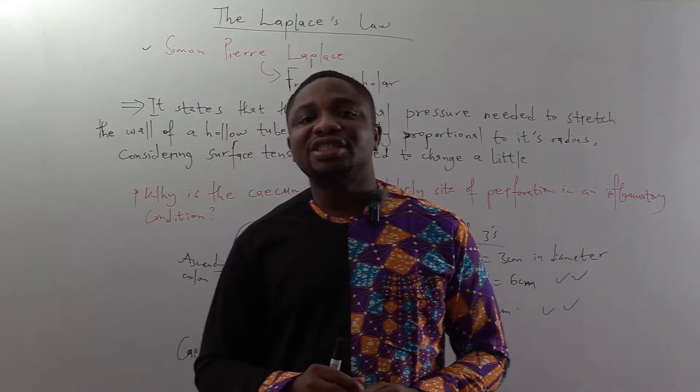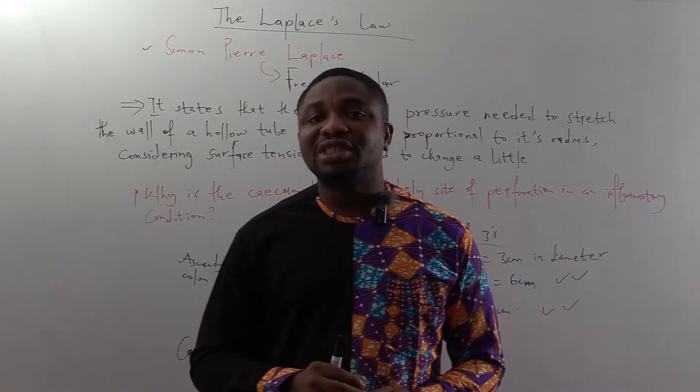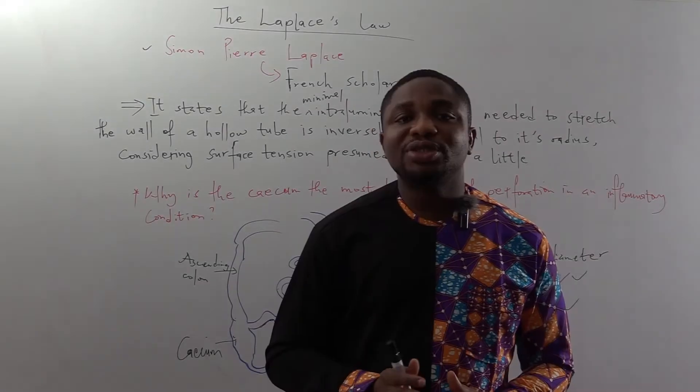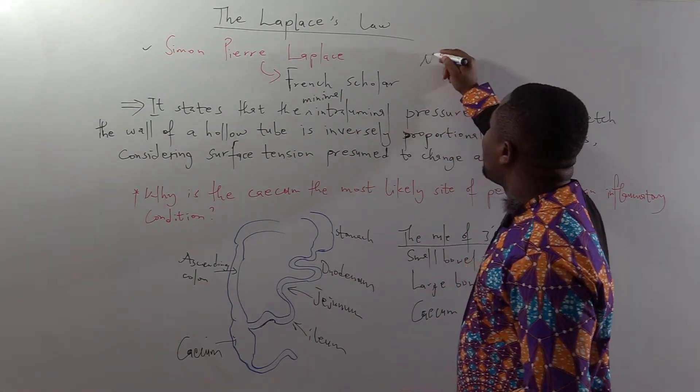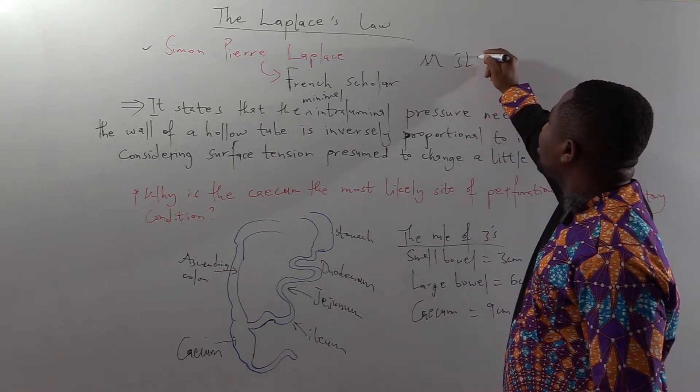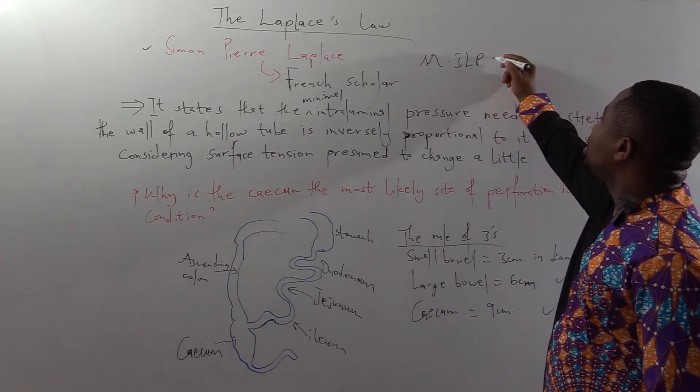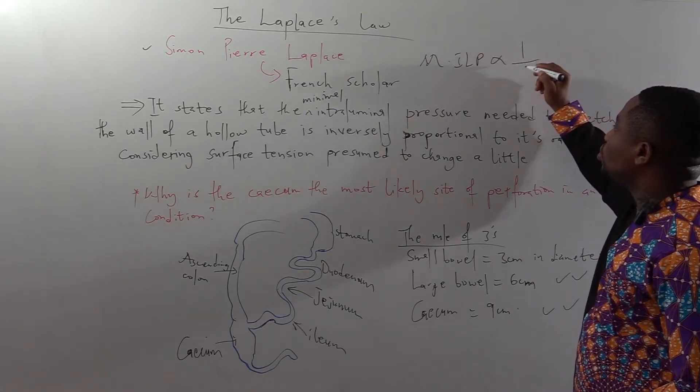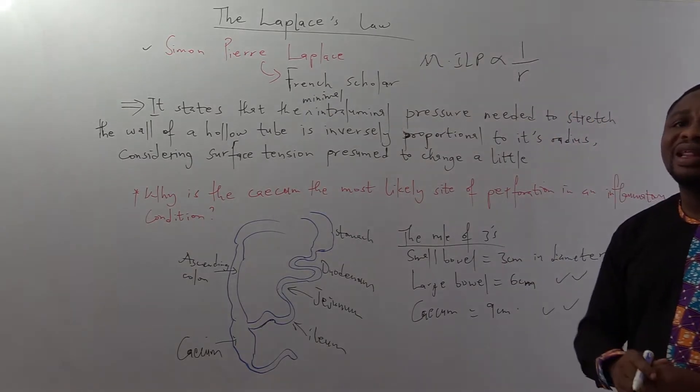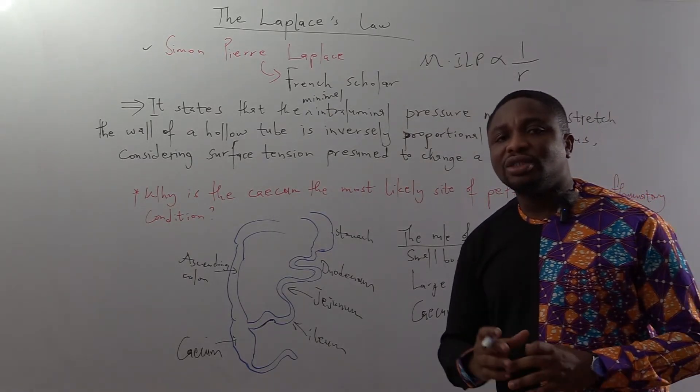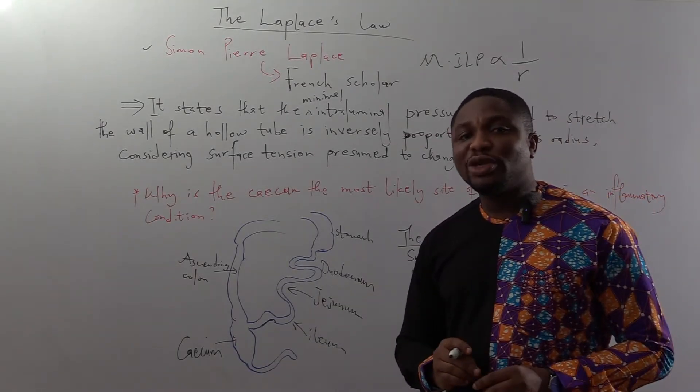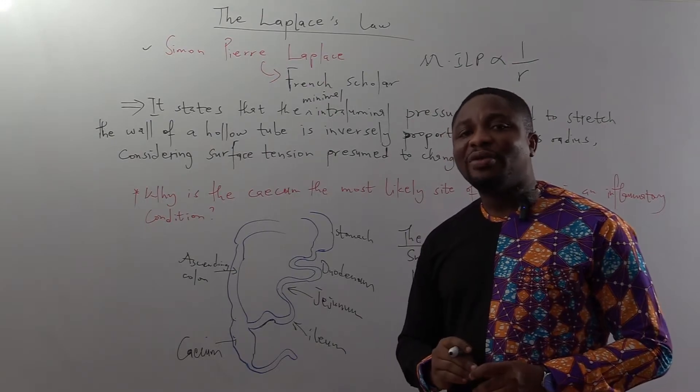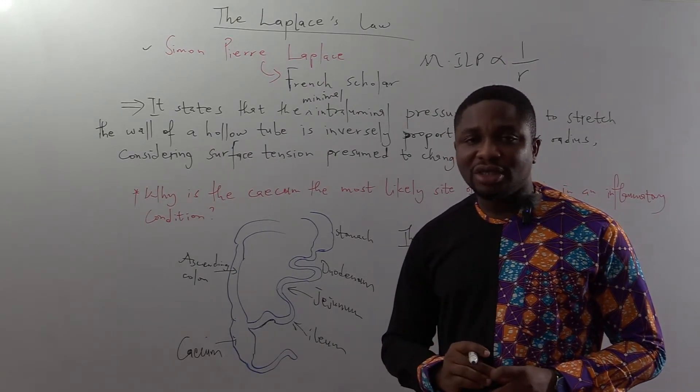considering surface tension is presumed to change a little. So if you are looking at the minimal intraluminal pressure, it is going to be inversely proportional to the radius of that tube that you want to stretch the wall. The minimal intraluminal pressure that you need would vary inversely with the radius.